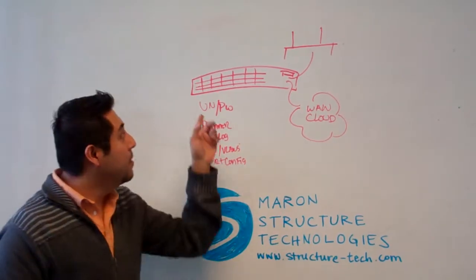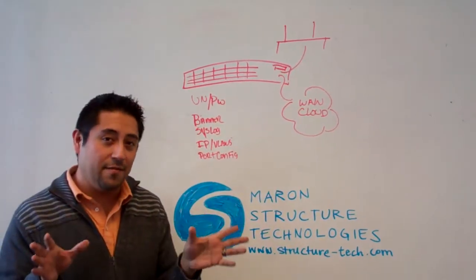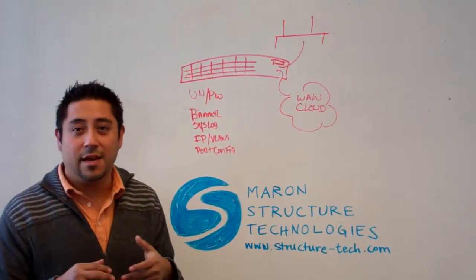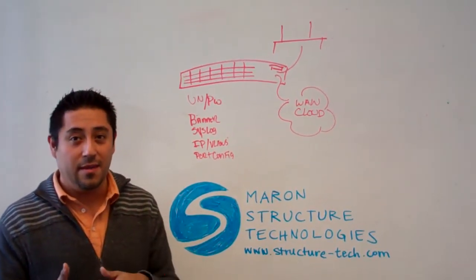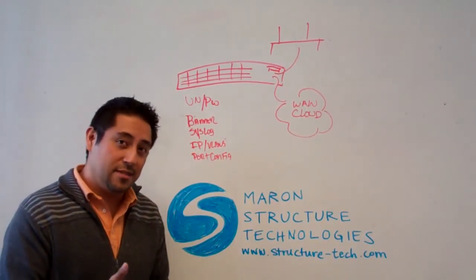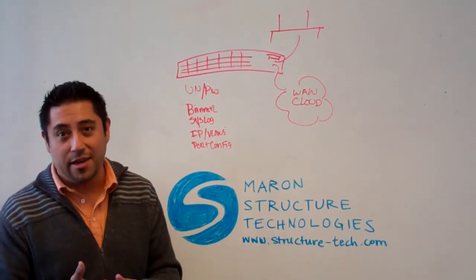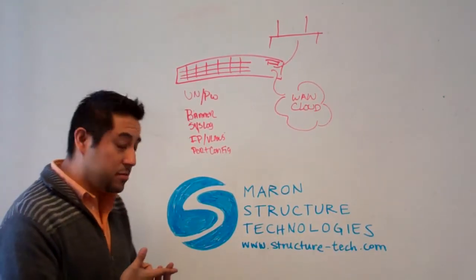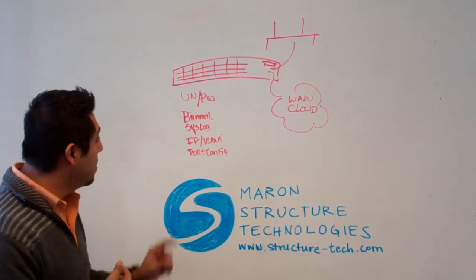Syslog. You want your switch to go somewhere to send out information. You want it to send out pertinent information, whether it be any emergency, user access, or authentication. Those are certain things that you can apply to syslog.